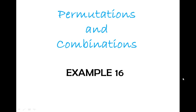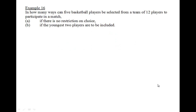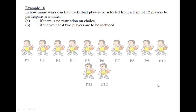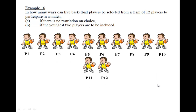Let's look at permutations and combinations, example 16. In how many ways can 5 basketball players be selected from a team of 12 players to participate in a match if there is no restriction on the choice?